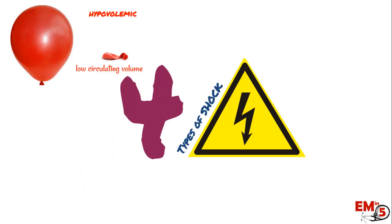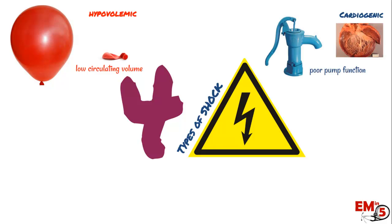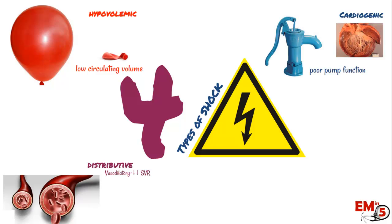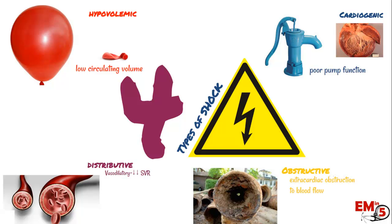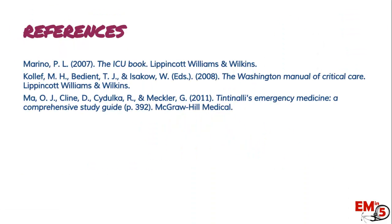Just to review, the four types of shock are: hypovolemic — a low circulating volume; cardiogenic shock — where your pump function is very poor; distributive shock — vasodilatory, with low systemic vascular resistance, including sepsis, anaphylaxis, and neurogenic shock; and lastly, obstructive shock — where you have an extracardiac obstruction to blood flow, like PE and tamponade. Here are the references, and thanks for joining us on EM in 5.